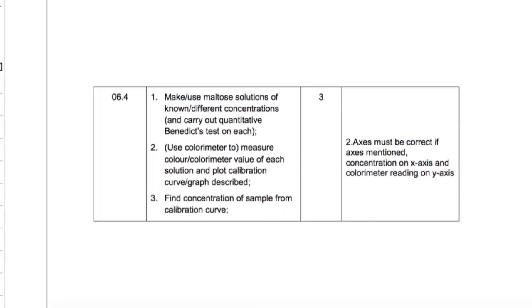So here's the mark scheme. Make solutions of known concentrations - that's our first point. Then measure their reading and plot it on a graph. So you could have mentioned the x and y-axis, like we did. And then actually, to find the maltose concentration of our samples to plot that curve at each time point - and that's our final point there.